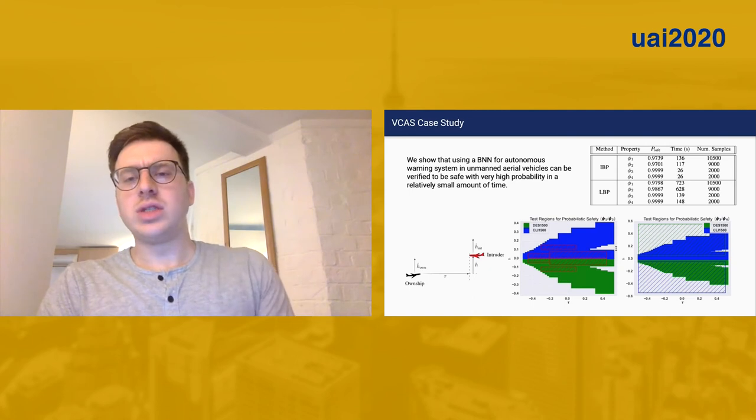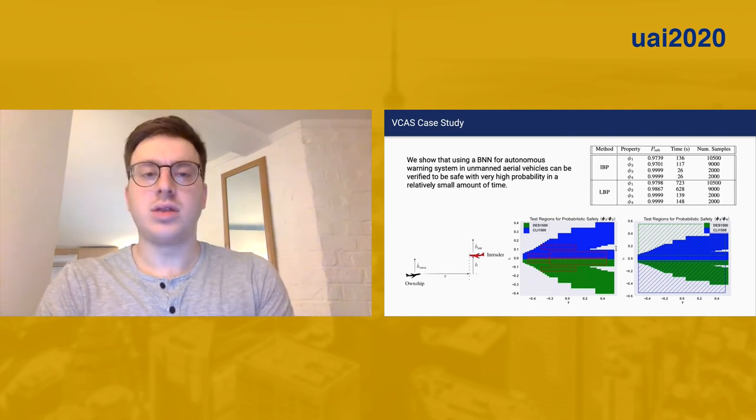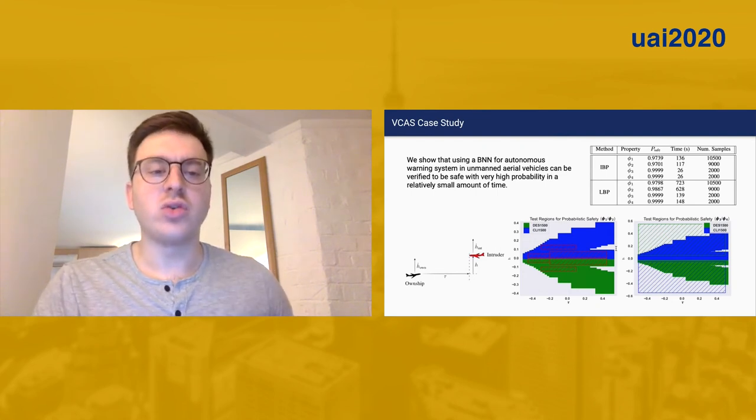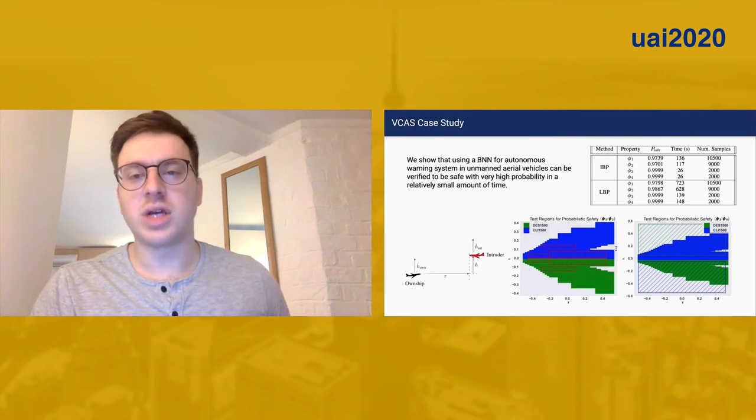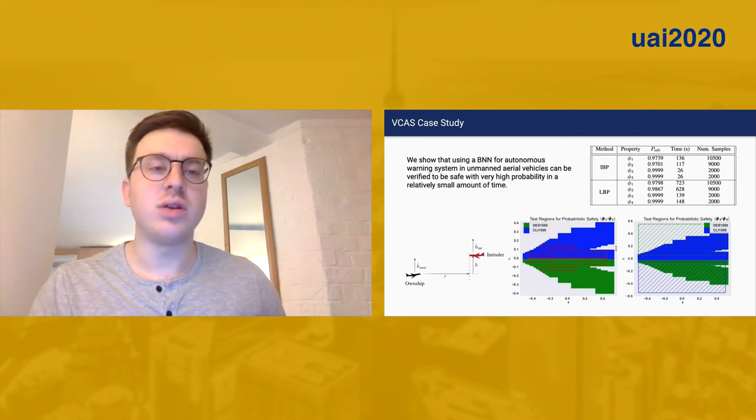We use this to verify BNN safety for a vertical collision avoidance system. The vertical collision avoidance system is an expansion of the well-known ACAS-XU data set, which is commonly used in deterministic safety literature.